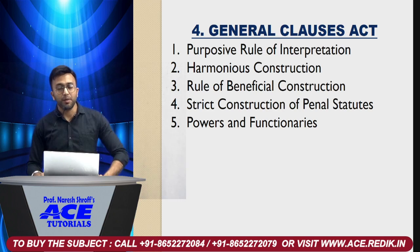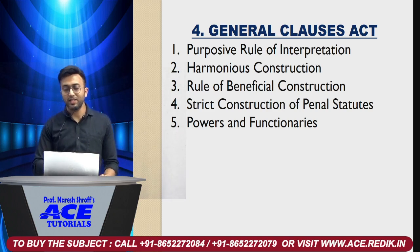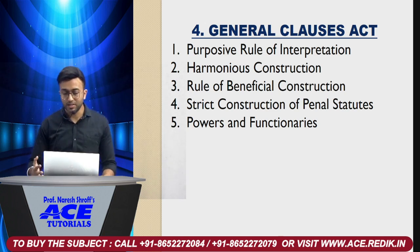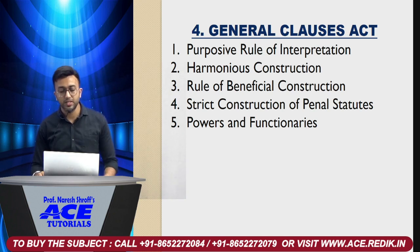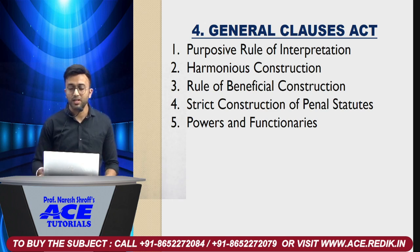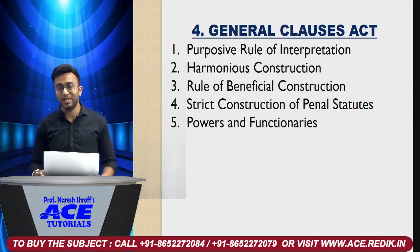The fourth chapter does not have much importance. There are 5 questions you should read — that is enough. But don't give this chapter too much weightage. The questions include: purpose of rule of interpretation, harmonious construction, rule of beneficial construction, strict construction of penal statutes, and powers and functionaries. That is enough.